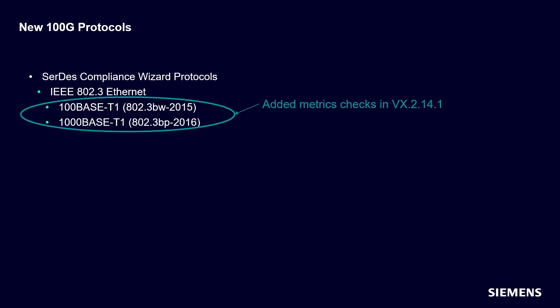Segment A supports up to four inline connectors for distances of at least 15 meters. Segment B, which is optional, supports four inline connectors for distances of at least 40 meters. There are new protocols of the 800 gigabit 8-lane protocol, which are extensions of the 100 gigabit protocol.